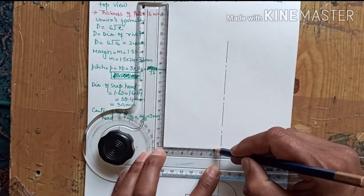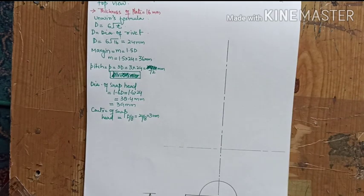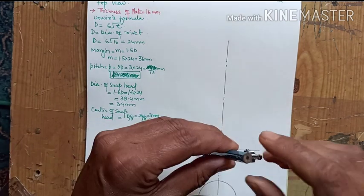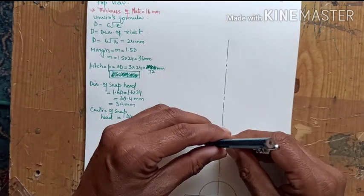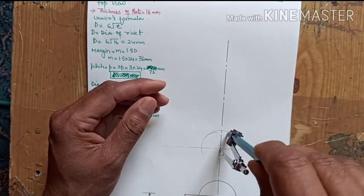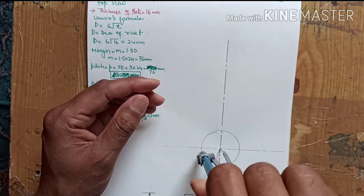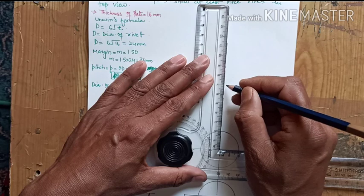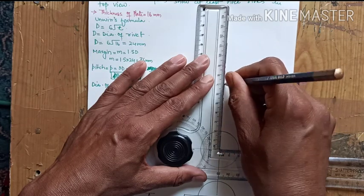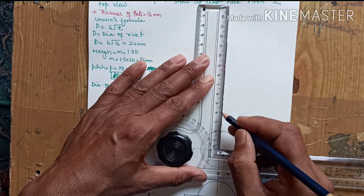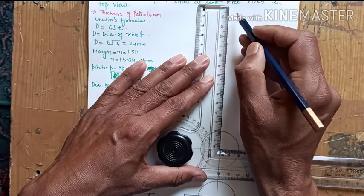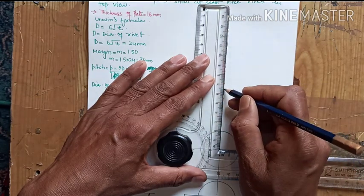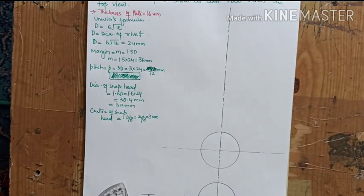After drawing the snap head we can bring this central line and now draw a horizontal dotted line to show the first rivet. There we can show the rivet head in the top view by drawing the dark circle. Similarly we can draw another one at a distance of 72mm which is the pitch, the distance from center of one rivet to the center of another. And there also we can draw a snap head.